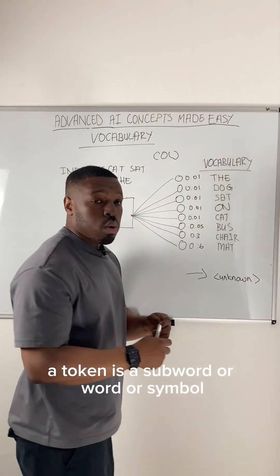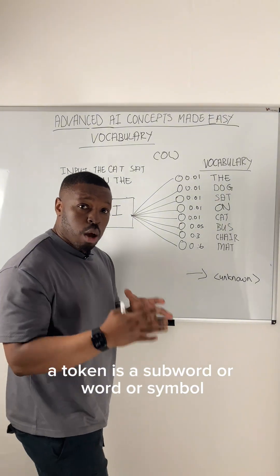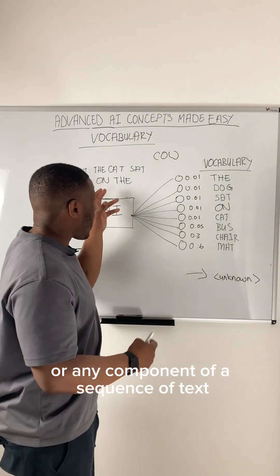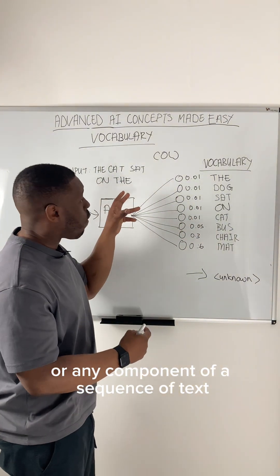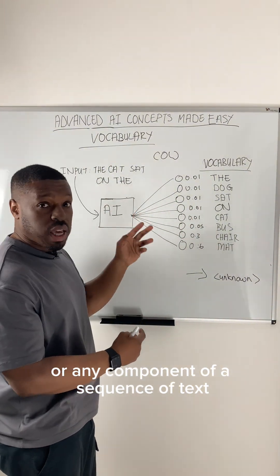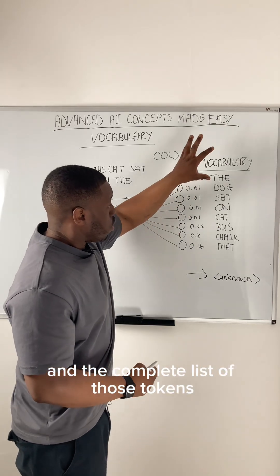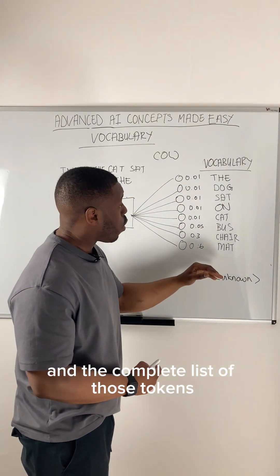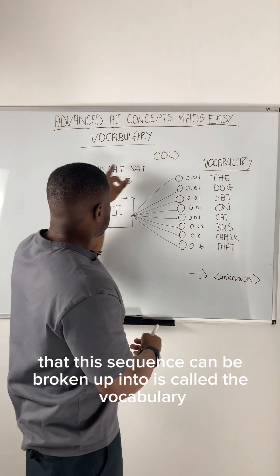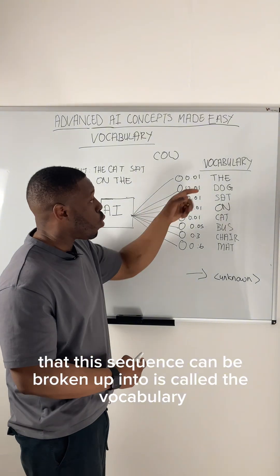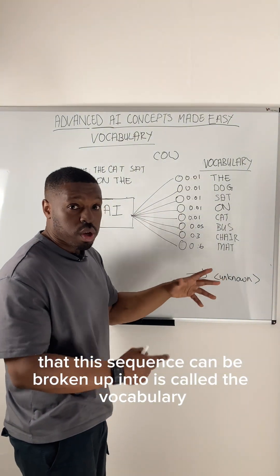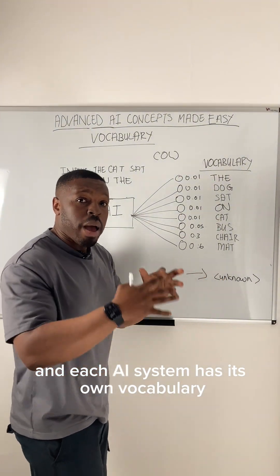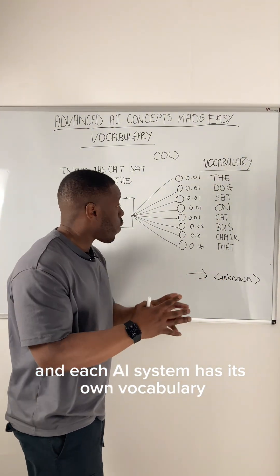A token is a subword, word, symbol, or any component of a sequence of text. The complete list of those tokens that a sequence can be broken up into is called the vocabulary, and each AI system has its own vocabulary.